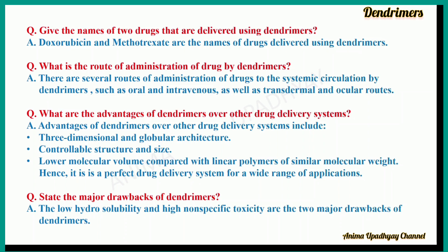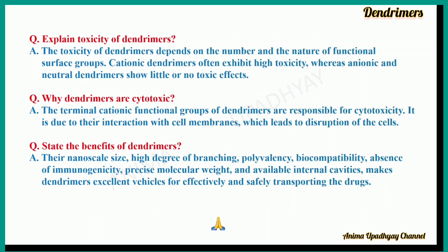State the major drawbacks of dendrimers. Low hydrosolubility and high nonspecific toxicity are the two major drawbacks of dendrimers. Explain the toxicity of dendrimers. The toxicity depends on the number and nature of functional surface groups. Cationic dendrimers often exhibit high toxicity, whereas anionic and neutral dendrimers show little or no toxic effects. Why are dendrimers cytotoxic? The terminal cationic functional groups of dendrimers are responsible for cytotoxicity, due to their interaction with cell membranes, which leads to disruption of the cells.